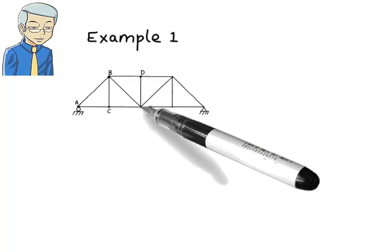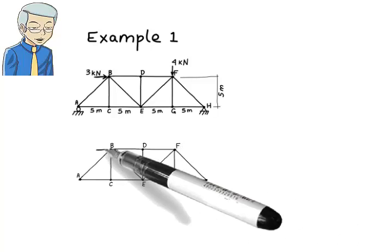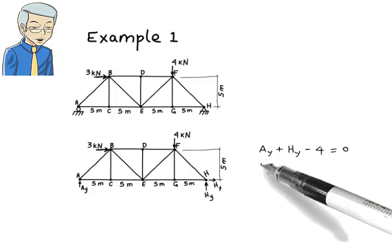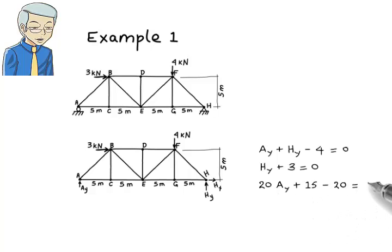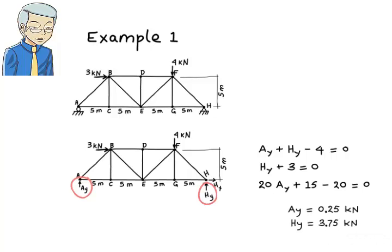Example 1. I'm going to use this example to present the steps involved in using the method of sections. Here is a statically determinate truss subjected to two concentrated loads. The truss rests on a roller support at point A and a pin support at point H. We wish to determine the force in members BD and CE. First, we need to calculate the support reactions by writing the equilibrium equations for the entire structure. Solving for the unknown reactions, we get Ay equals 0.25 kN, Hy equals 3.75 kN, and Hx equals negative 3 kN.